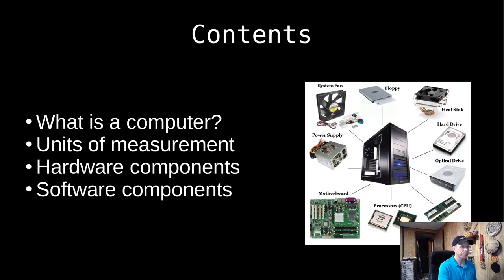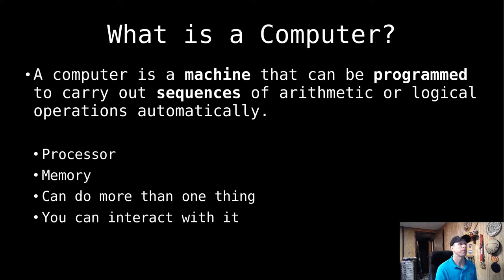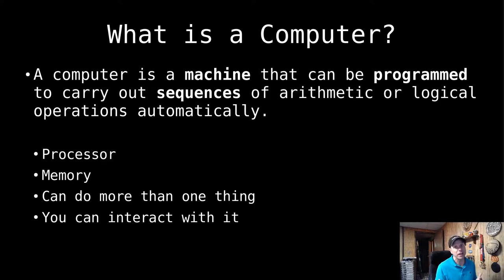So what is a computer? According to Wikipedia, a computer is a machine that can be programmed to carry out sequences of arithmetic or logical operations automatically. That would qualify most of our electronics in some way as a computer. I tend to say a computer should have some type of processor, some type of memory, and it should be able to do more than one thing, hopefully at a time.